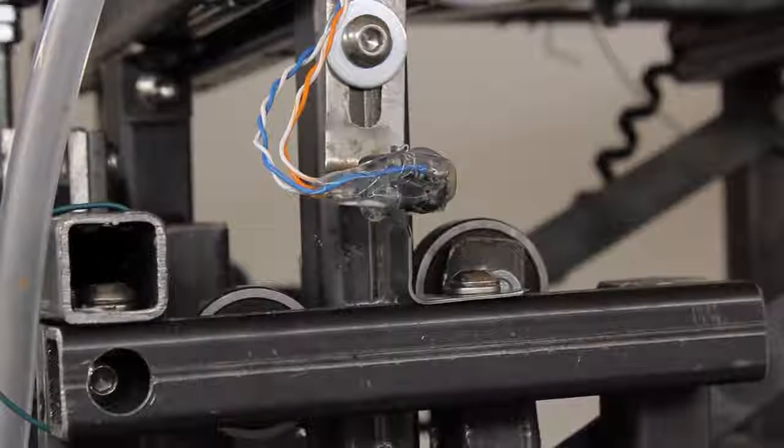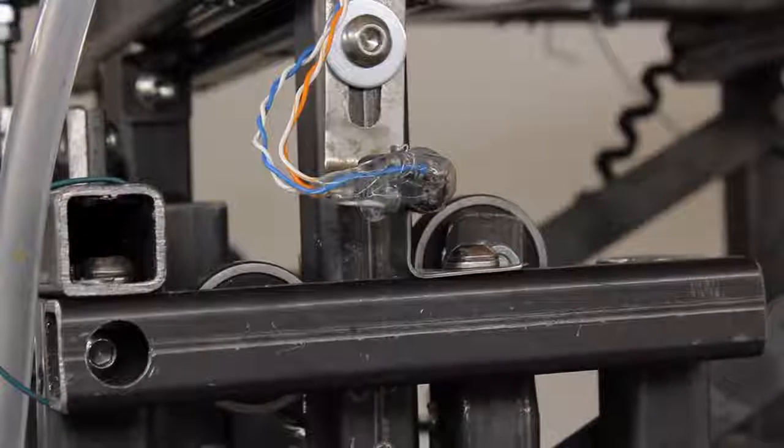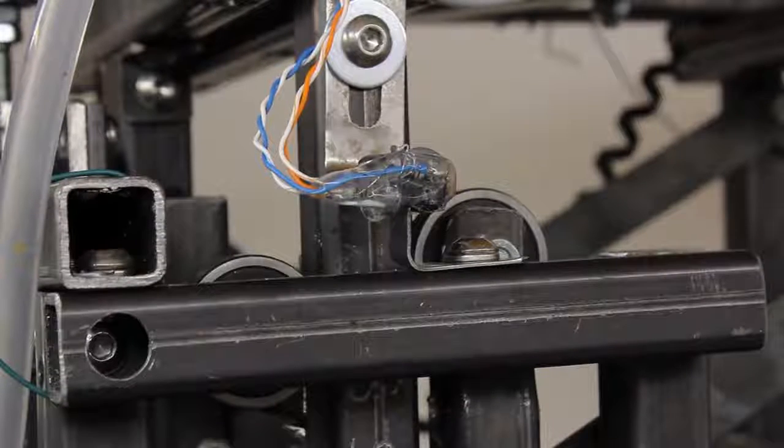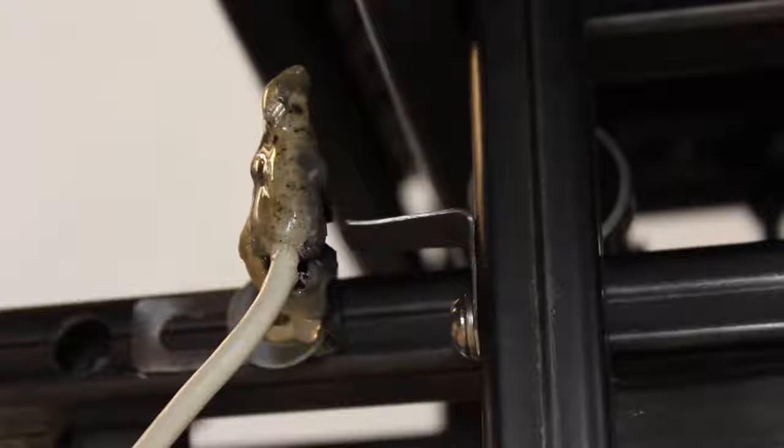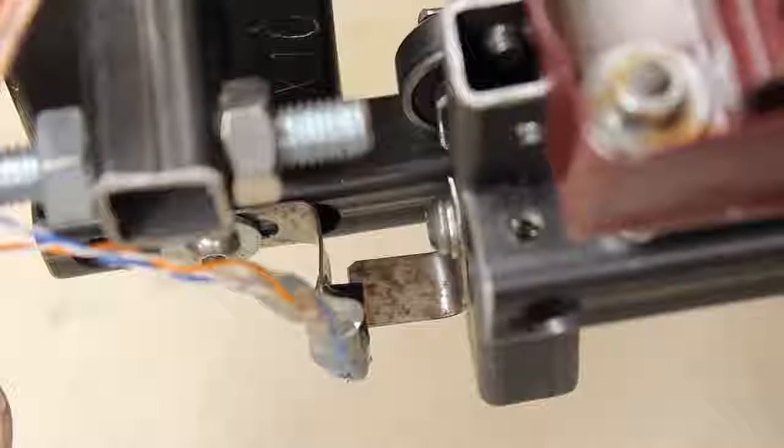An optional feature are the homing switches that are made of three optical sensors. One for the top position of the router motor, one for the Y-axis, and one for the X-axis.